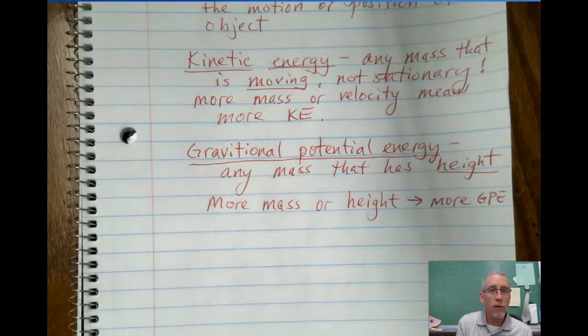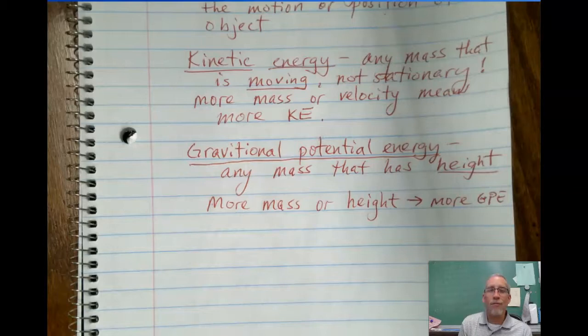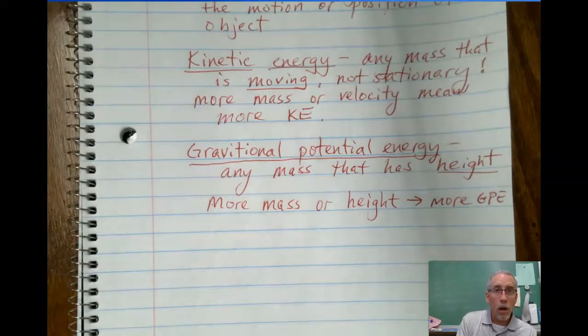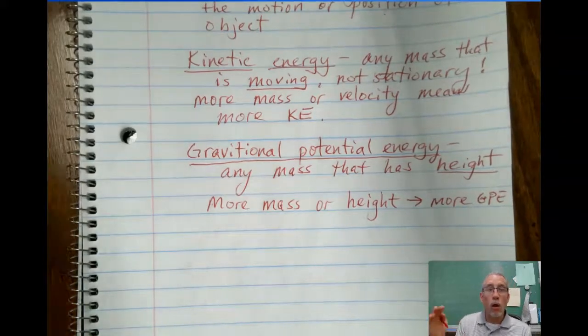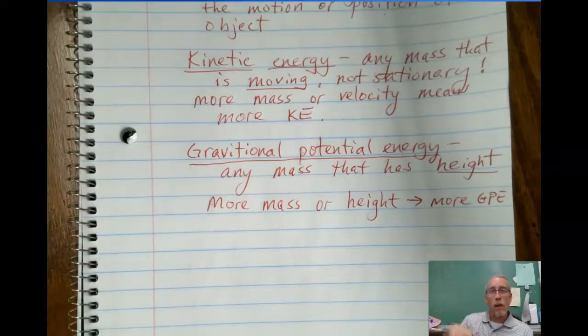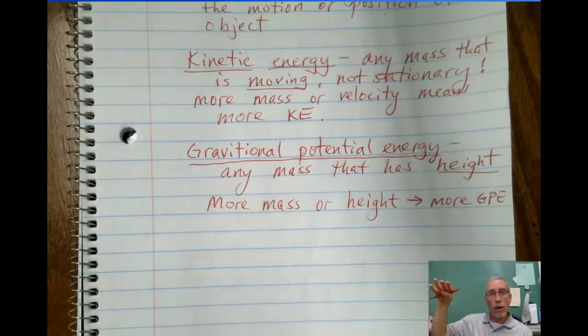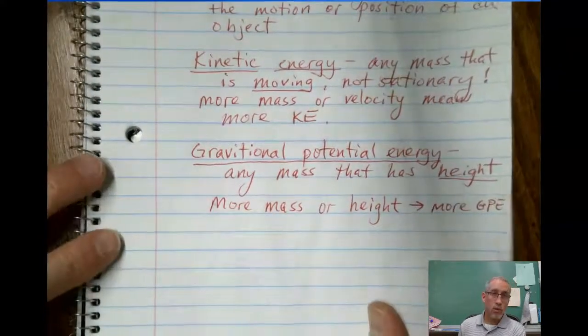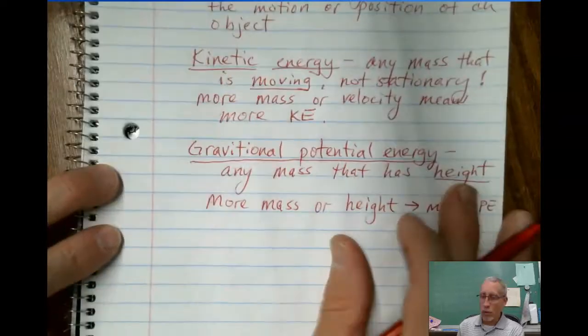But if it's moving, now it has kinetic energy, but still doesn't have gravitational potential energy because it's on the floor, if it's moving across the floor, it doesn't have any height. Now, you could have both. You could have something moving and up high. Think about maybe a car that's on an overpass on the highway. It has some height above the ground below it, and it's also moving. So just because you have one doesn't mean you can't have the other. So that's the second subtype of mechanical energy.